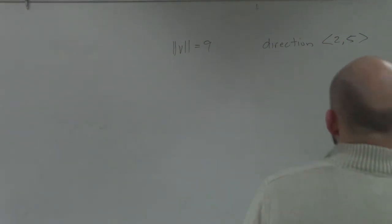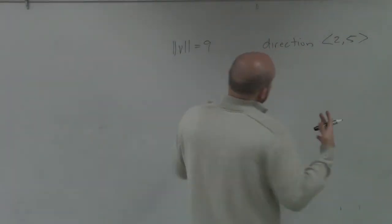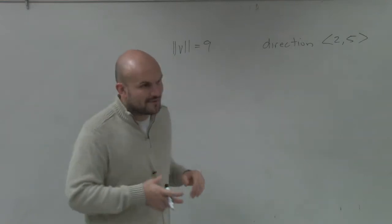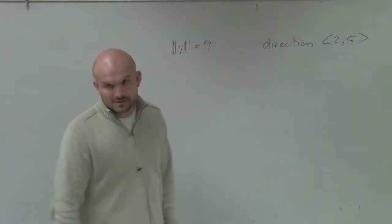What we're going to do in this problem, ladies and gentlemen, is we're looking to write a vector that's in the same direction as 2 comma 5, but that has a magnitude of 9.